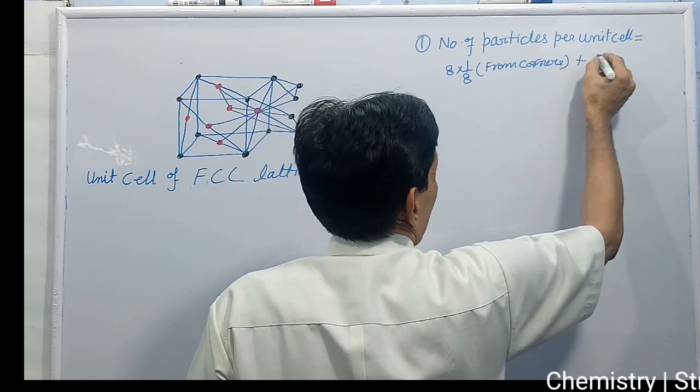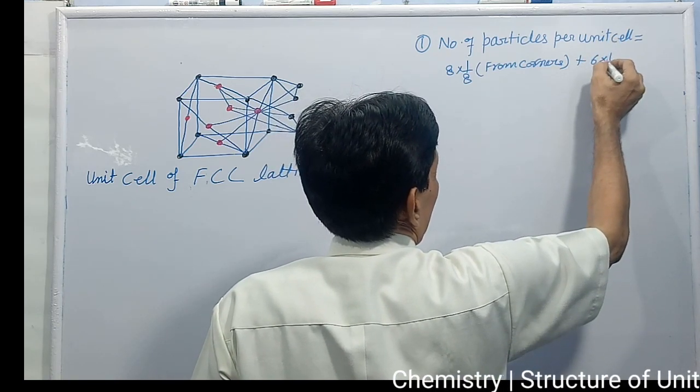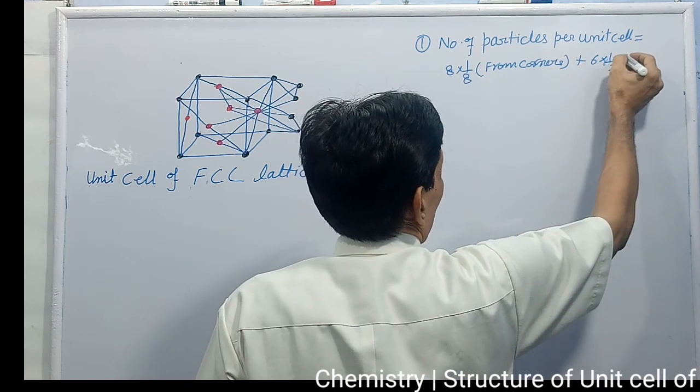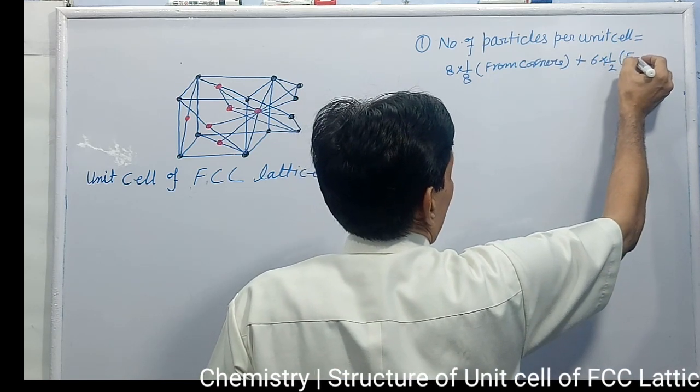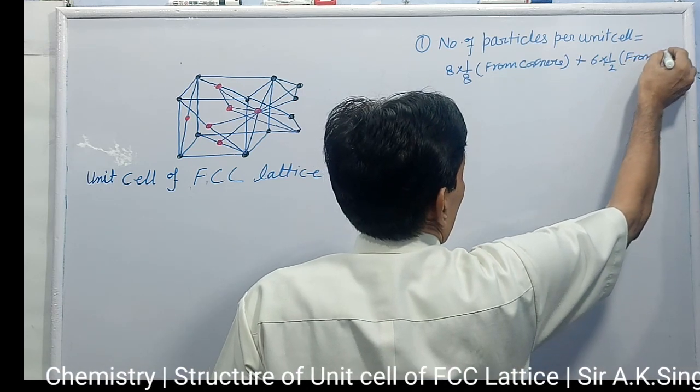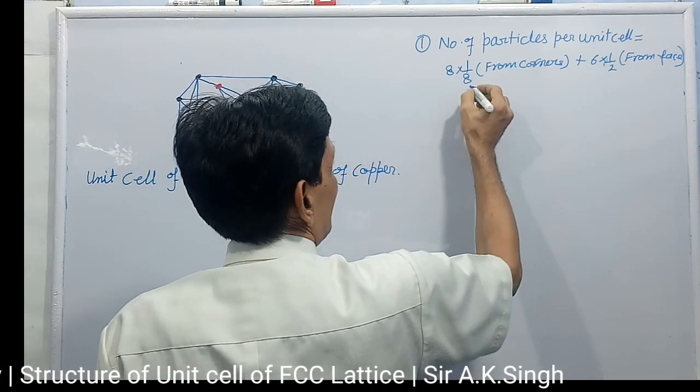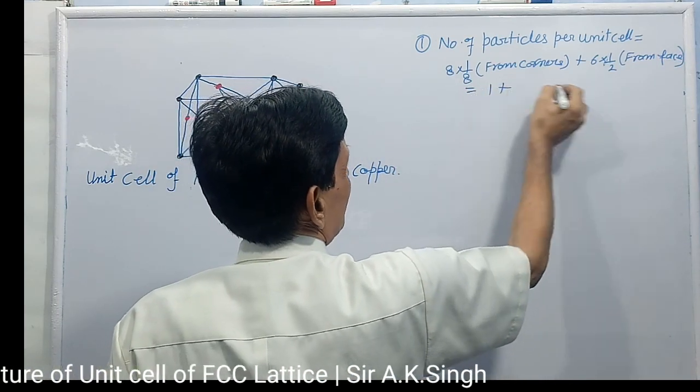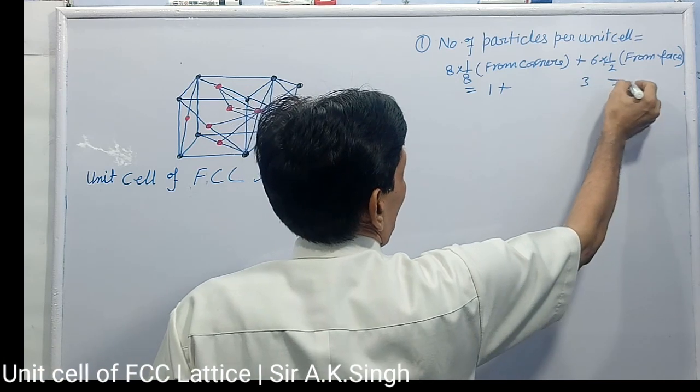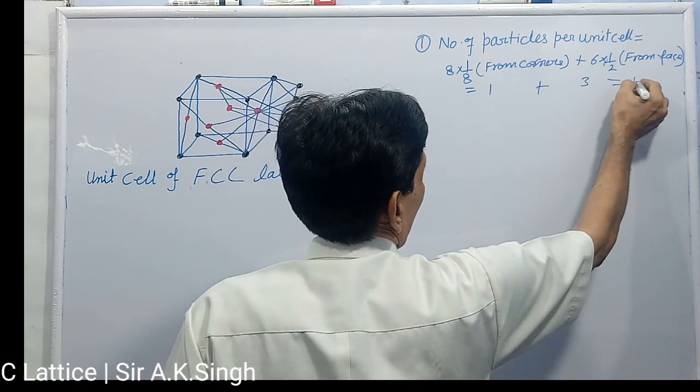Plus 6 into 1 by 2 from face center, from face center. Then it is coming 1 plus 3 equal to 1 plus 3 equal to 4.